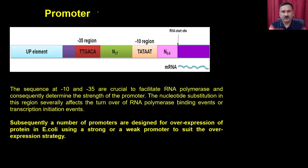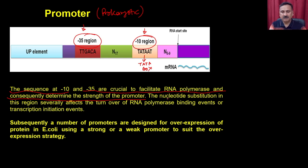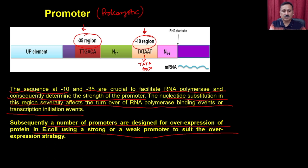As far as the promoter is concerned, in a prokaryotic system the promoter contains classical features such as the minus-35 region and the minus-10 region, also called the TATA box. The sequences at minus-10 and minus-35 are crucial to facilitate RNA polymerase binding and determine the strength of the promoter. The better these sequences are, the more efficiently RNA polymerase will bind to these regions and the better transcription you will get. Nucleotide substitution in this region severely affects the turnover number of RNA polymerase binding and the transcription initiation.